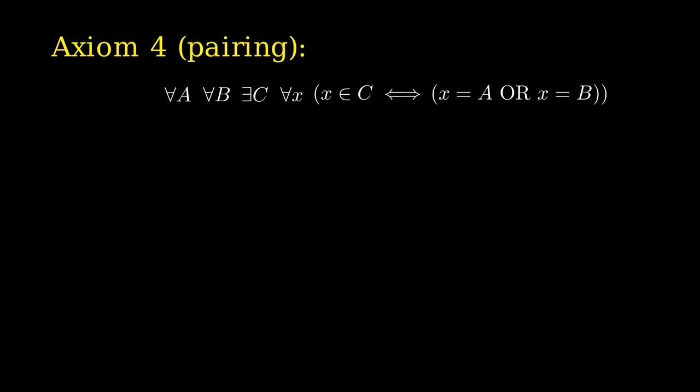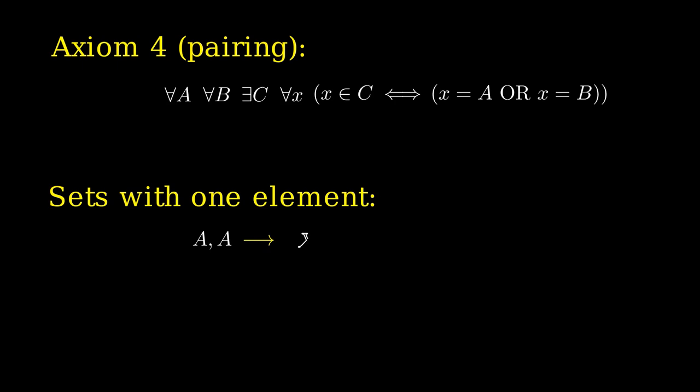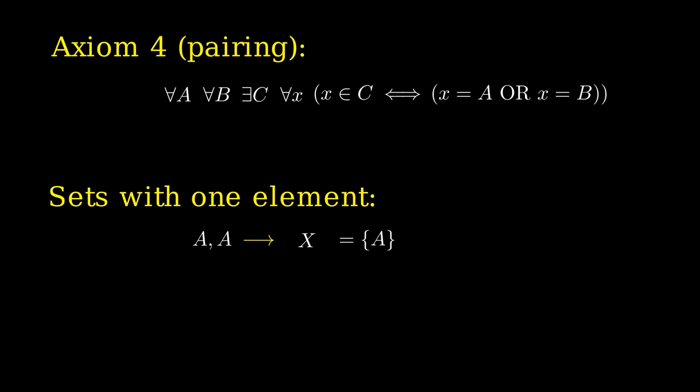Axiom 4 does not only allow us to create pairings but also to create sets with just one element. If I set A and B both equal to A in axiom 4, I can create the set whose elements are A and A, and this, according to axiom 1, is no different from the set that only has the element A. So we can create sets with just one element.